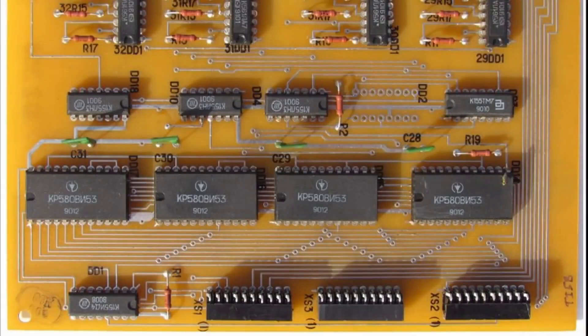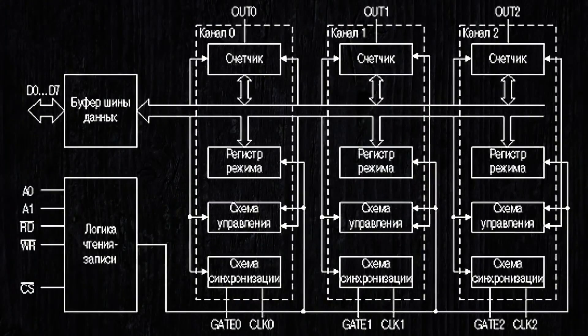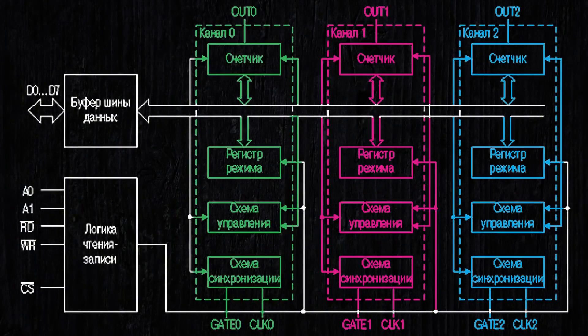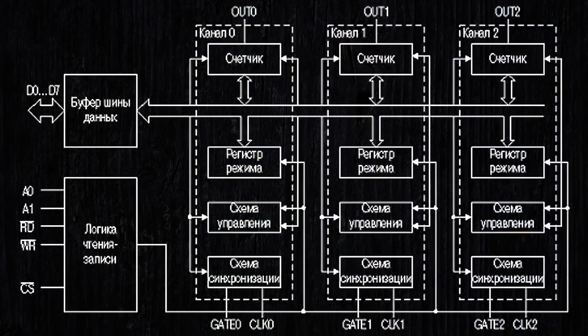Let's take a look at the block diagram of the KR580-6653. It consists of three independent 16-bit programmable counters and a control unit. Each channel has two clock inputs, a strobe input or enable input, and one output. The microchip operates in one of six modes. The operating mode of each channel and the bit width of the channel counter are selected by writing a control word into the control register.